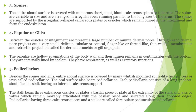Spines: The entire aboral surface is covered with numerous short, stout, blunt, calcareous spines or tubercles. The spines are variable in size and are arranged in irregular rows running parallel to the long axis of the arms. The spines are supported by irregularly shaped calcareous plates which remain buried in the integument and form the endoskeleton.